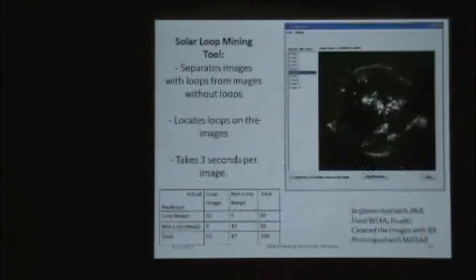Based on those classifier models, we implemented the Solar Loop Mining Tool. With this tool, astrophysicists enter a set of images. Then our tool separates them into two groups: groups with loops and groups without loops. Generally it takes three seconds per image, all the image preparation and the training. We also tested this tool. We had 100 images from different years, 50 of them had loops and 50 didn't have loops. We were able to discriminate these images with high confidence, high precision and recall.